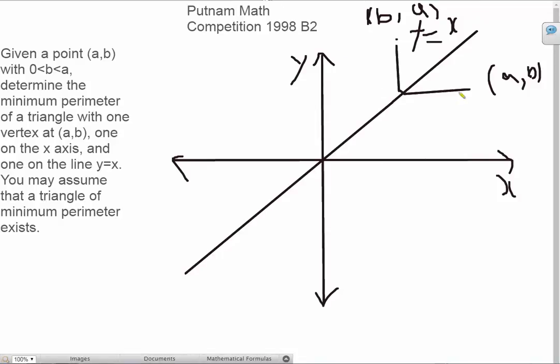Now, let's reflect (a,b) across the x-axis as well. So here you are, that's (a,-b).